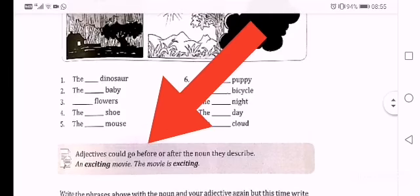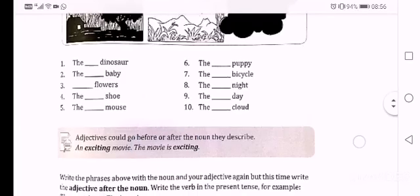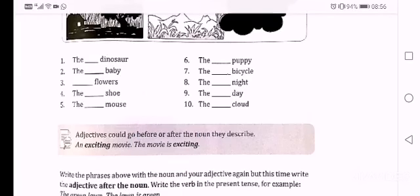Then also, adjectives could go before or after the noun that they describe. So the ten phrases you did above, the adjective went before the noun. But it can also go after the noun. Example: an exciting movie. There the adjective exciting is before the noun movie. The movie is exciting. There the adjective exciting is after the noun movie.